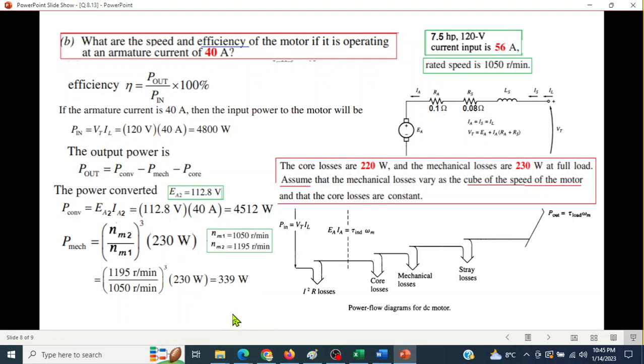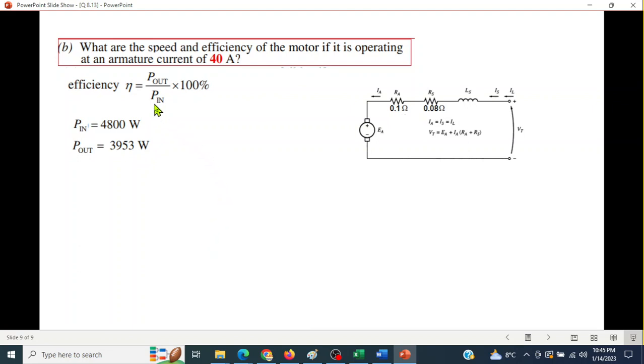Now we'll plug it to get P_out: P_converted minus P_mechanical minus P_core, so 3953 watts. So we have found P_in, we have found P_out. Now we can calculate the efficiency. These two are known, so plugging in, the efficiency is 82.4 percent. So this is how part b will be solved.